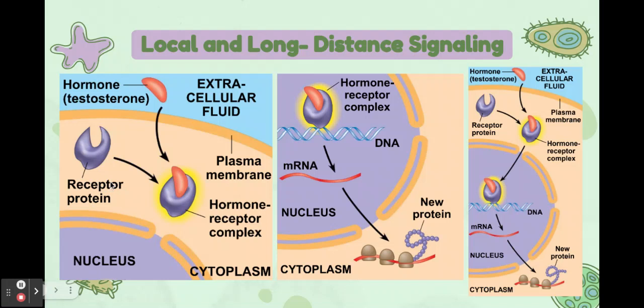Here's a visual: the steroid hormone testosterone passes through the plasma membrane and binds to a receptor protein in the cytoplasm, activating it to form a hormone-receptor complex. This complex enters the nucleus and binds to specific genes. The bound protein acts as a transcription factor, stimulating transcription of the gene into mRNA. The mRNA is then translated into a specific protein — so testosterone binding ultimately activates new protein synthesis.